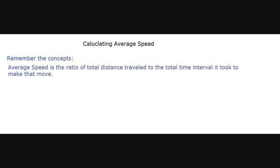We will now calculate the average speed of the car. Average speed is the ratio of the total distance traveled to the total time interval it took to make that move. Therefore average speed equals total distance traveled divided by total time. Total distance equals 3 meters plus 4 meters, which equals 7 meters.